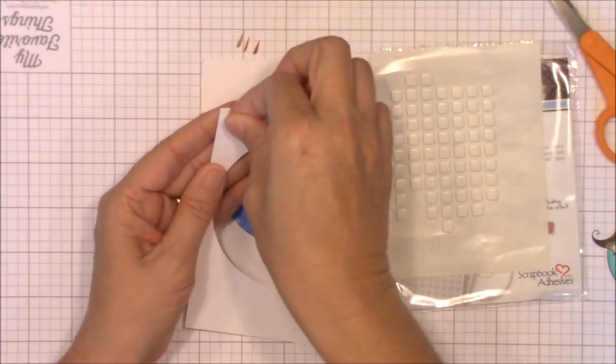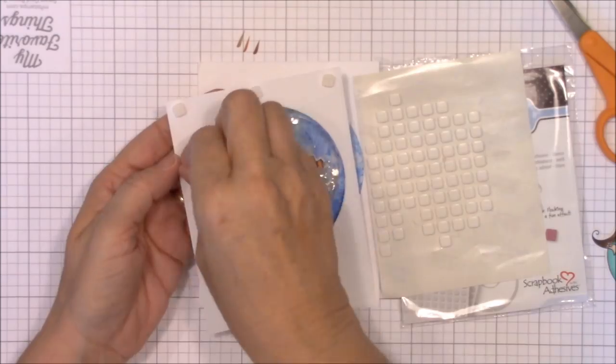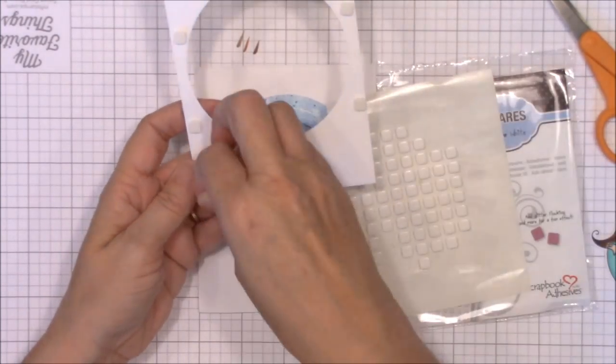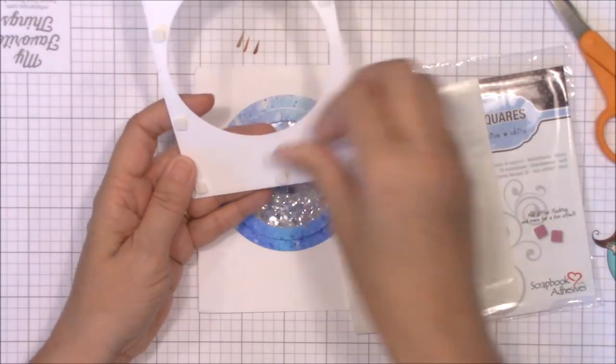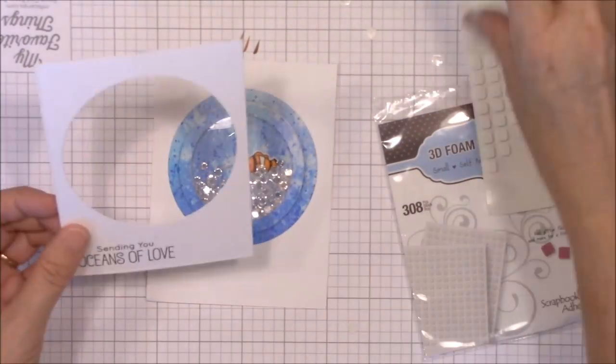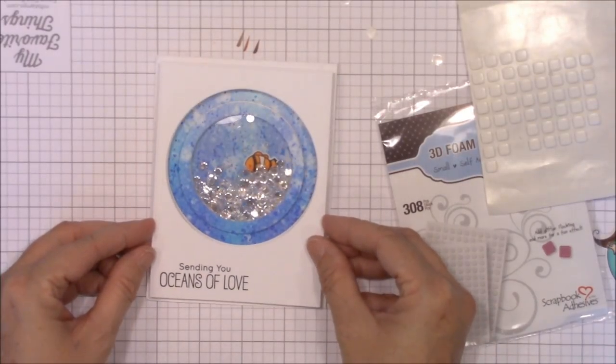Since we added two layers of foam tape to the shaker pocket, we'll need to add two layers of foam squares on the back of the image panel. It's tedious, especially picking off all those rascally foam square liners. But once you're done doing that, you can align and adhere your image panel to the card base.